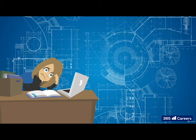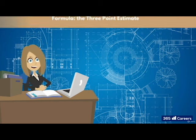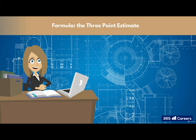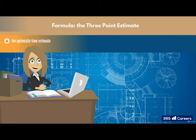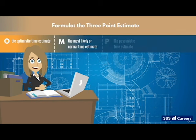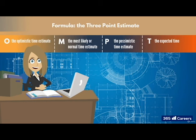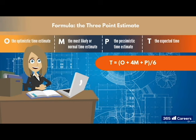Oh, and one last thing. If the project manager is really, really stuck, they can use the following formula. The three-point estimate. But remember, a project manager should rely on their skills and experience first. But if they need to, they can think of each task as having three time estimates. The optimistic time estimate, we'll call O. The most likely or normal time estimate, we'll call M. And the pessimistic time estimate, P. The expected time, T, is estimated by putting the values into the following formula. Plug the numbers in and you get a time estimate.